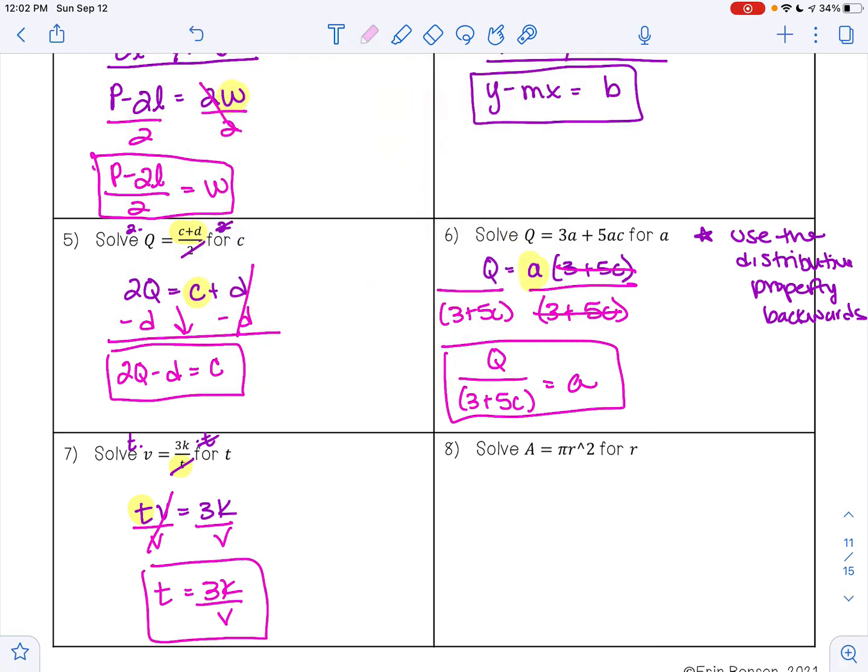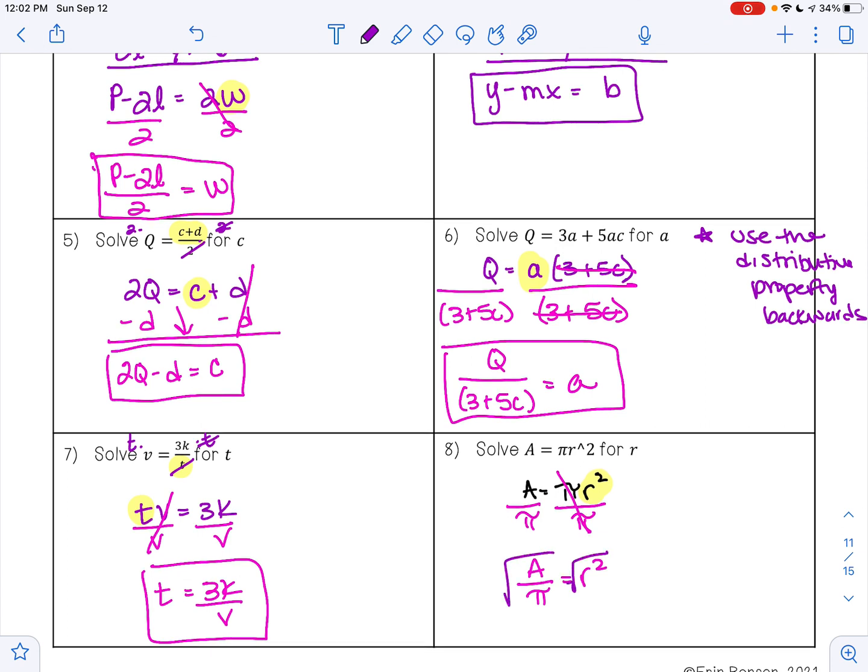On example 8, if it helps, you could rewrite this so that it's A times pi, A equals pi R squared. So if I want to get R alone, the first thing I would do is divide both sides by pi. So I'm going to have A divided by pi is equal to R squared. To undo a square, we're going to take the square root of both sides, and so I'll have the square root of A divided by pi is equal to R. And this would be my answer.